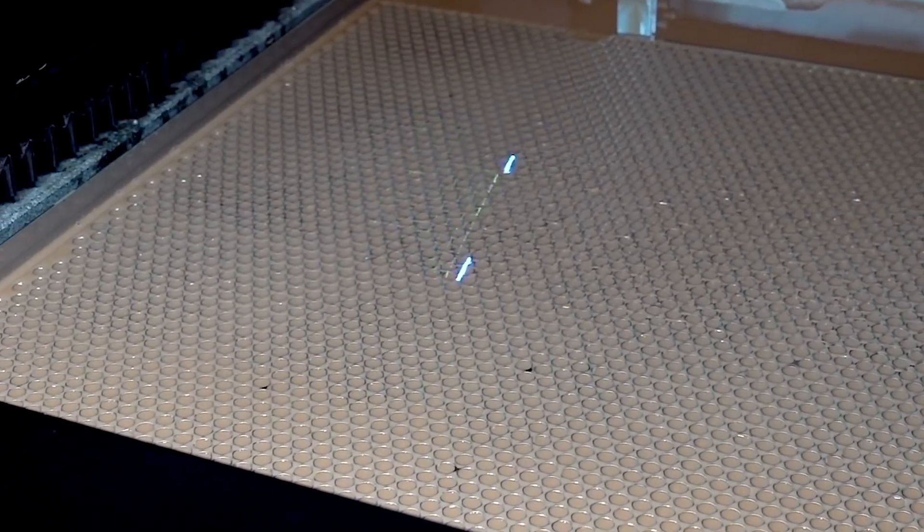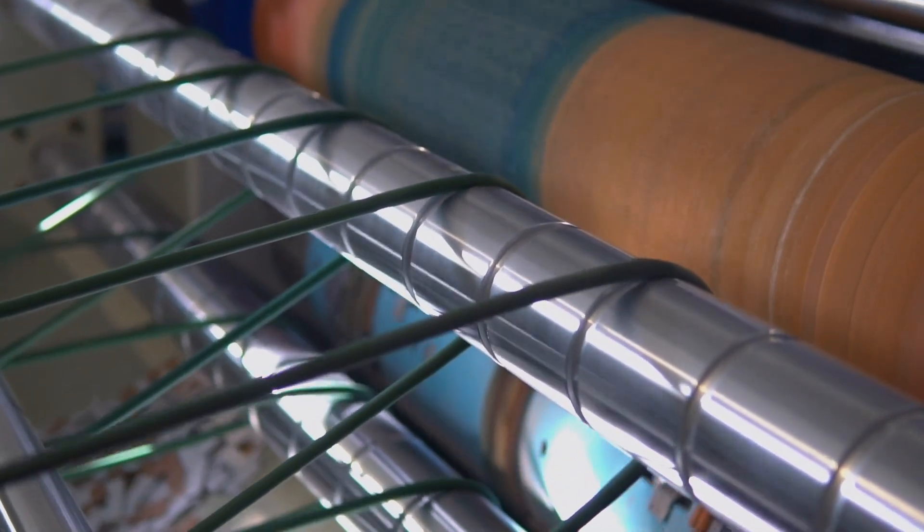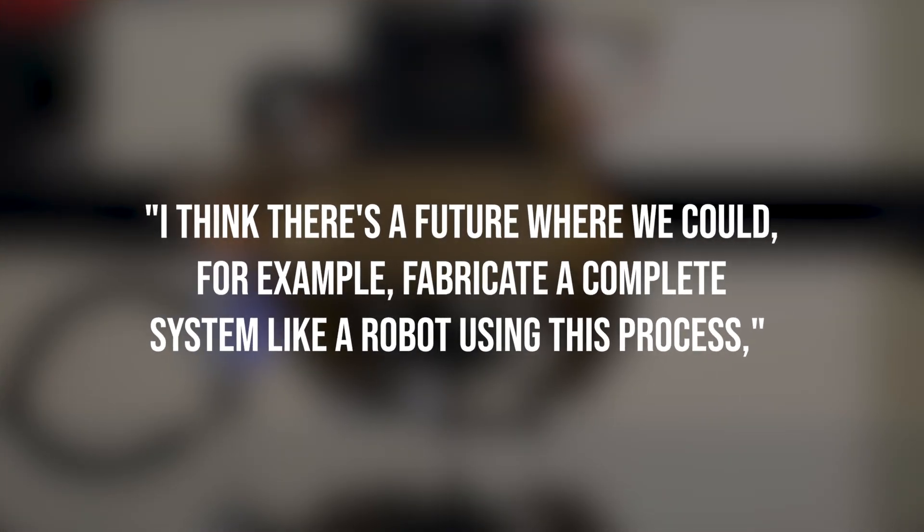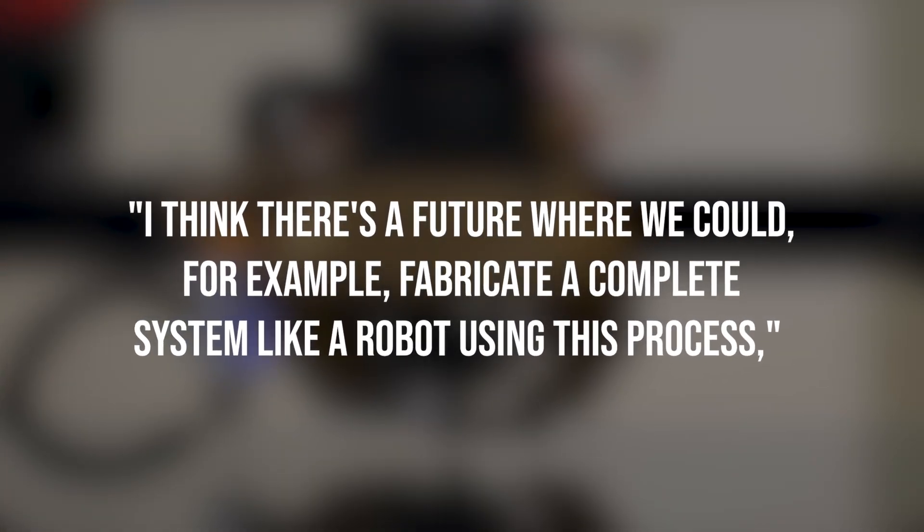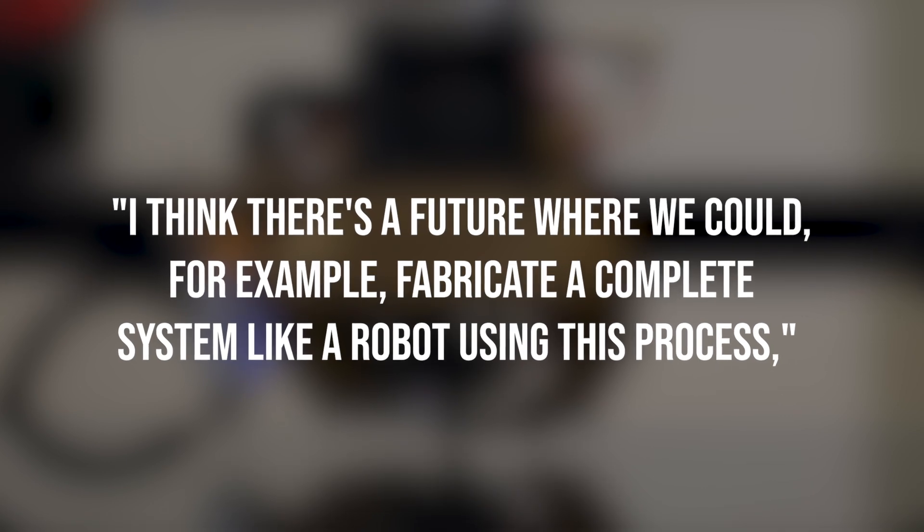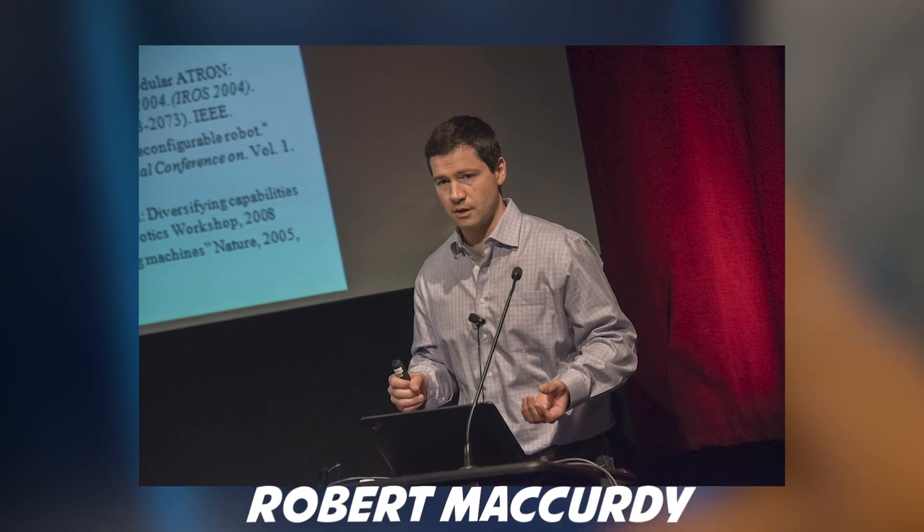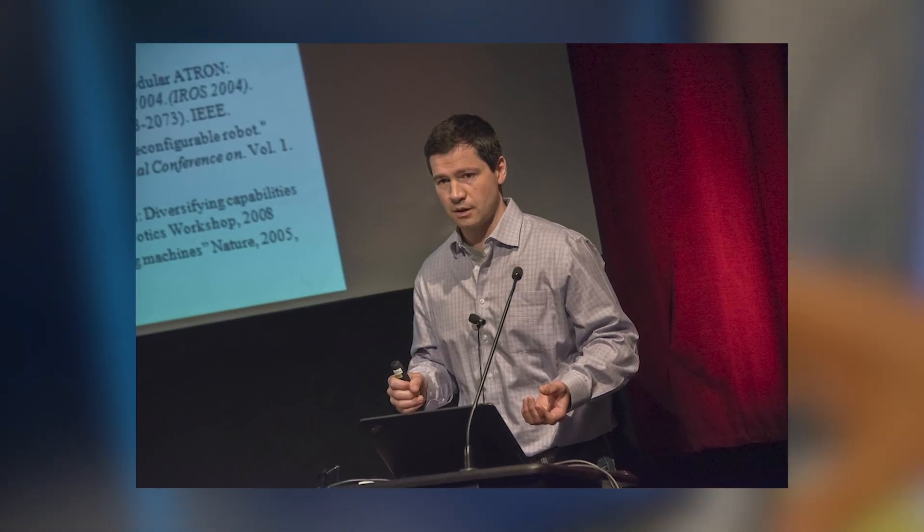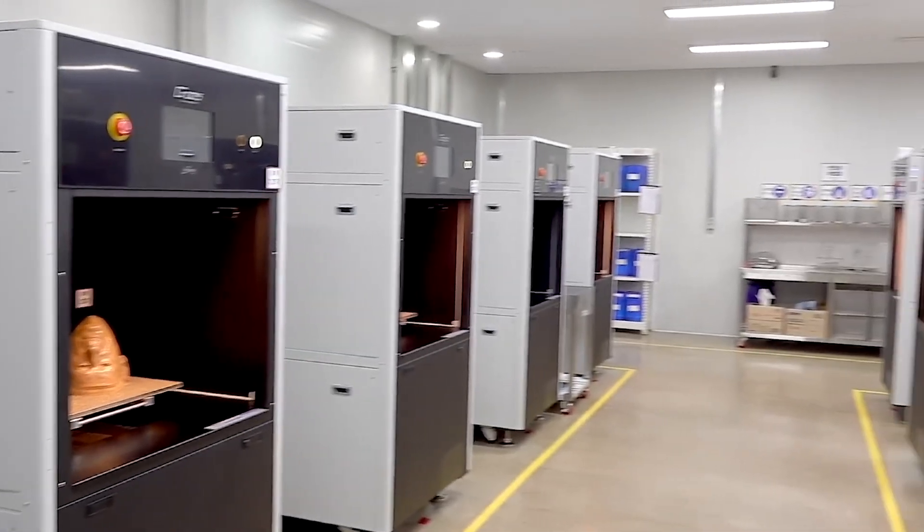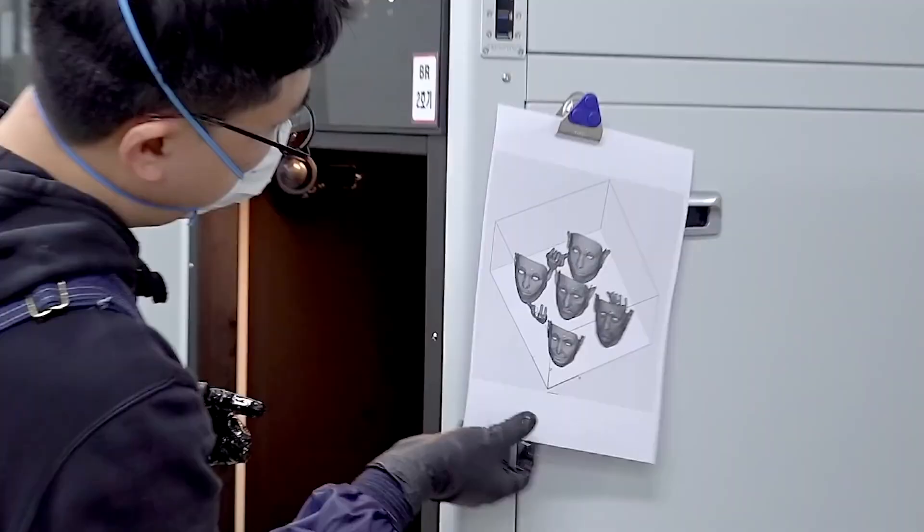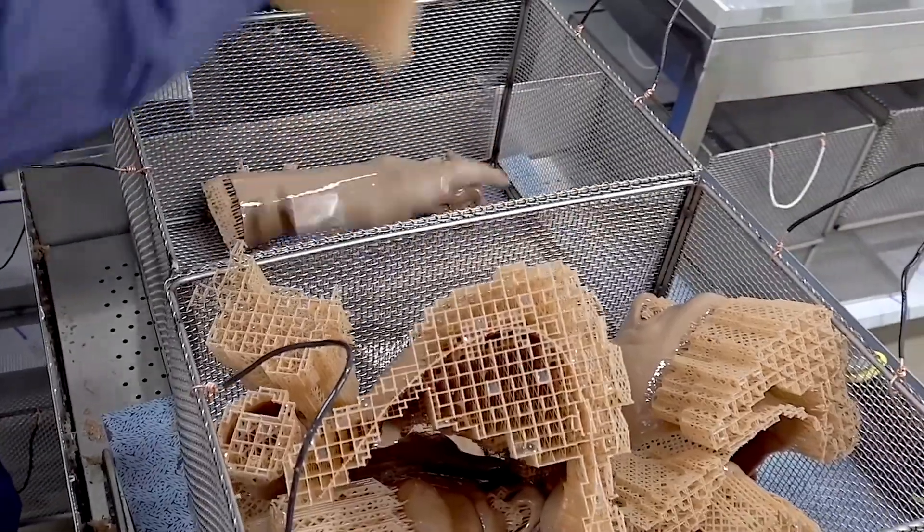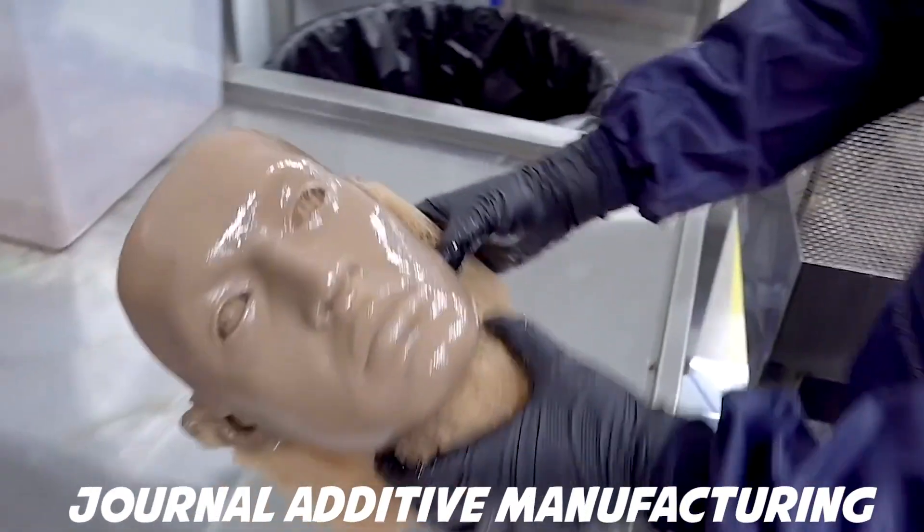In a new study, the team lays out a strategy for using currently available printers to create materials that meld solid and liquid components, a tricky feat if you don't want your robot to collapse. "I think there's a future where we could, for example, fabricate a complete system like a robot using this process," said Robert McCurdy, senior author of the study and assistant professor in the Paul M. Rady Department of Mechanical Engineering.